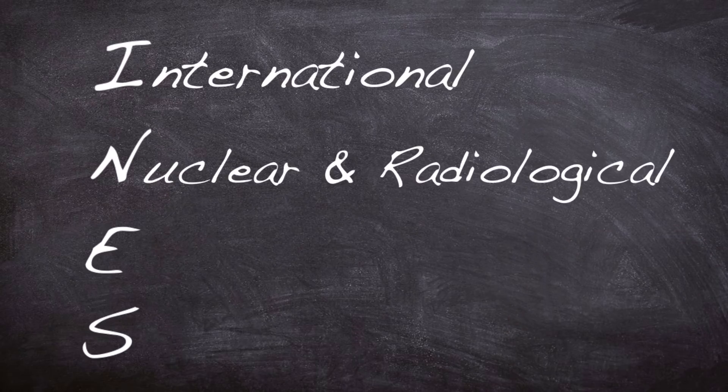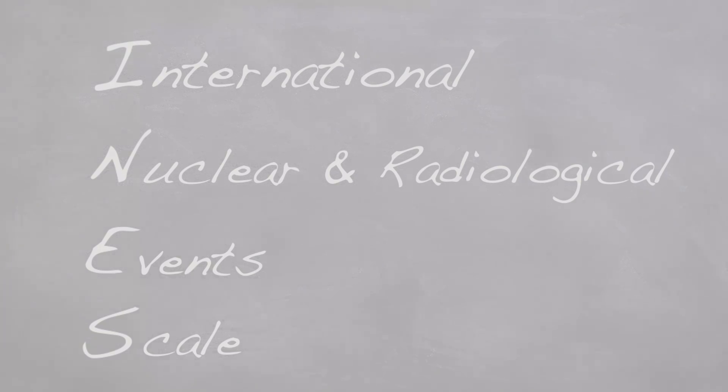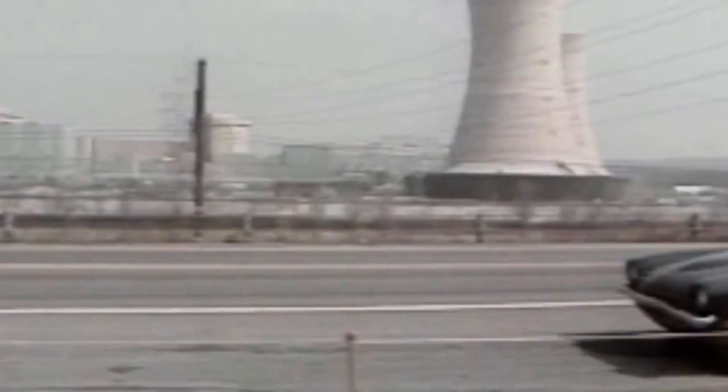The International Nuclear and Radiological Event Scale or INES for short was developed in 1990 by the International Atomic Energy Agency. The scale was originally thought up to categorise certain events and accidents in nuclear power stations.